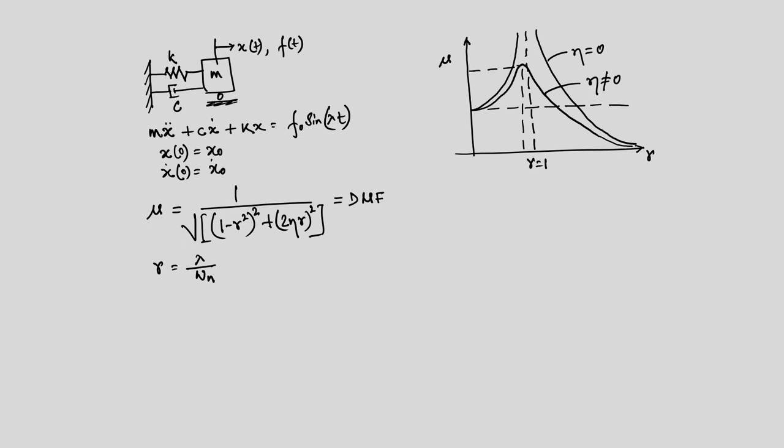Recall in previous lectures we discussed the logarithmic decrement technique — using that technique we can quantify damping from the time-history response. If we have a freely vibrating body with finite damping and measure that response, we can find the natural frequency from the time period and damping using logarithmic decrement. Today we are going to derive how we can use frequency-domain information to quantify damping.